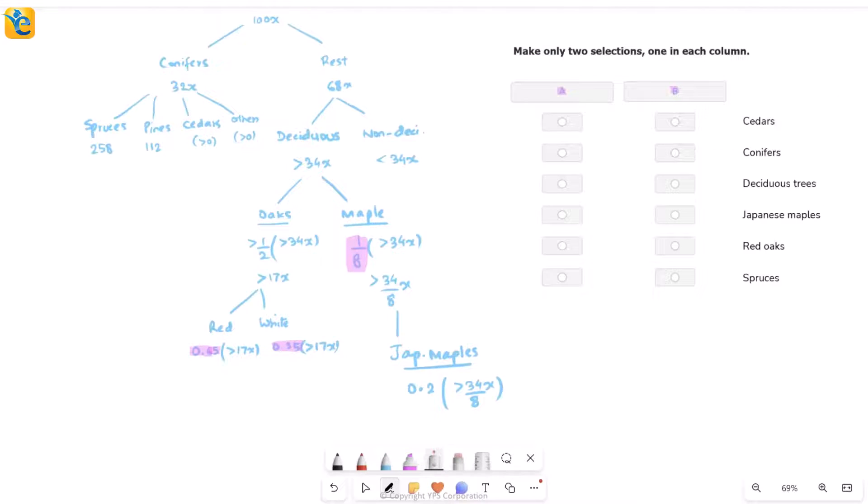And here we are. Now let's think about these choices. First one, you're talking about cedars. Let's see. Cedars is something I don't know anything about. I don't know how many cedars I have. So there's no way I can connect it with conifers or total or anything. Which means cedars cannot be the answer for any of these columns. I'll simply cross it out.